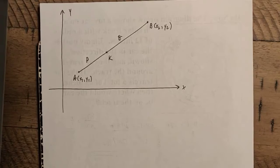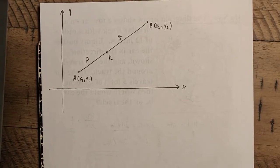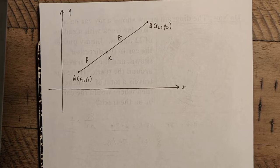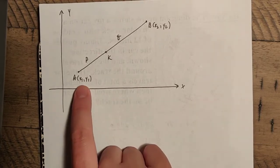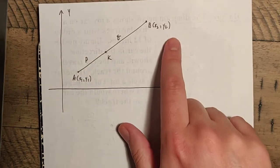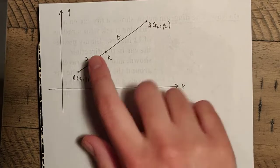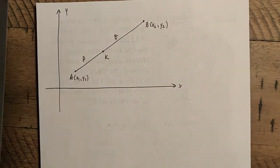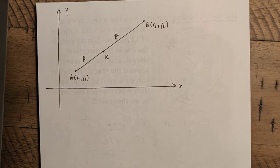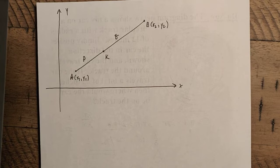All right, everybody. So when I said next level, I meant this is where we're going to be trying to do this for the general case. Note that we have our points X1, Y1, X2, Y2, and we're going to divide this segment into a P to Q ratio. Just giving you fair warning at the beginning here: this is going to be very heavily algebra-based. So hold on to your hats.